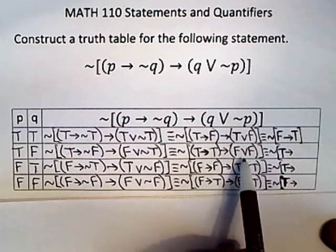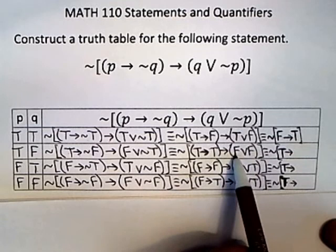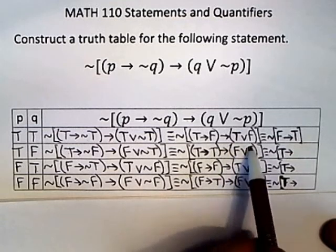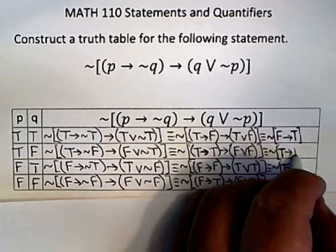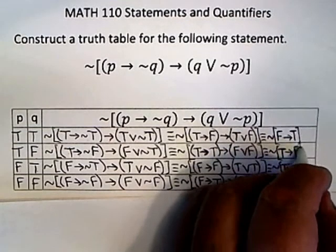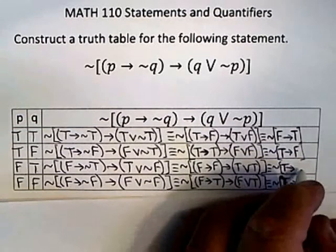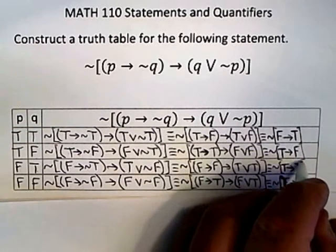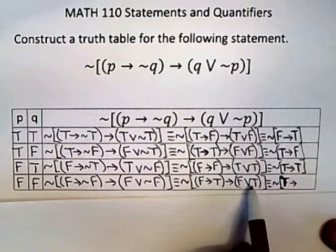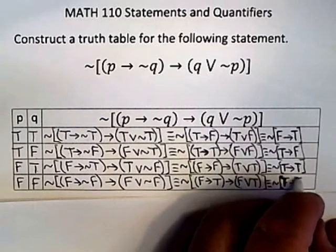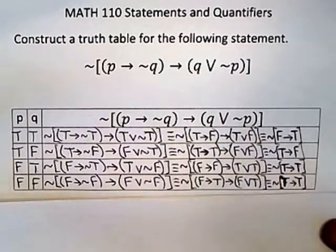Now I'm doing ORs again. I'm back to ORs. And remember, the only time an OR is false is if they're both false. And there it is right there. They're both false. They're not both false here, so that must be true. And they're not both false there, so that must be true.